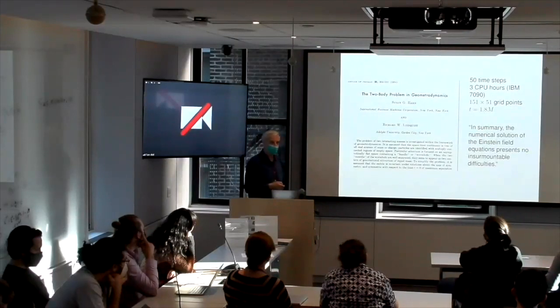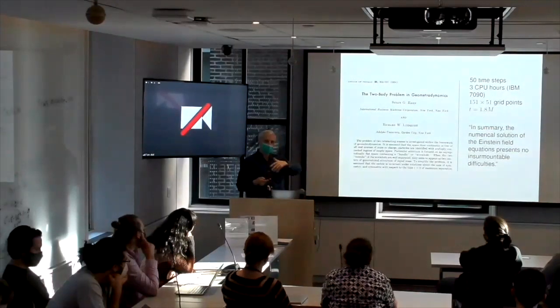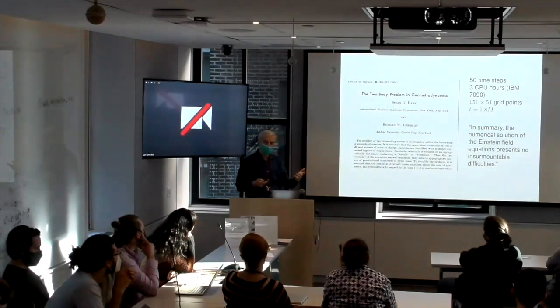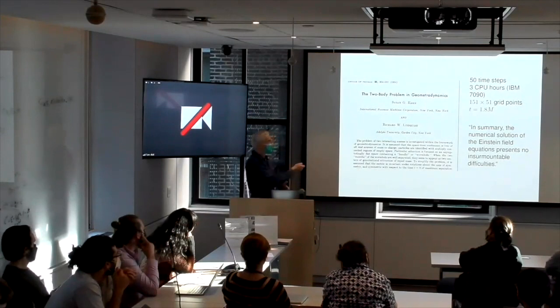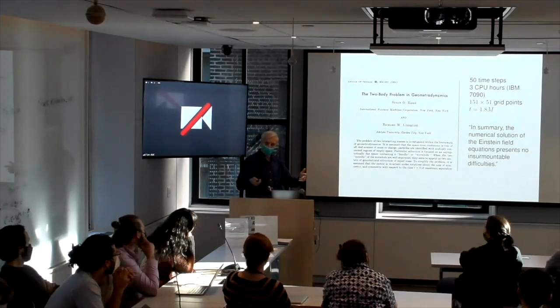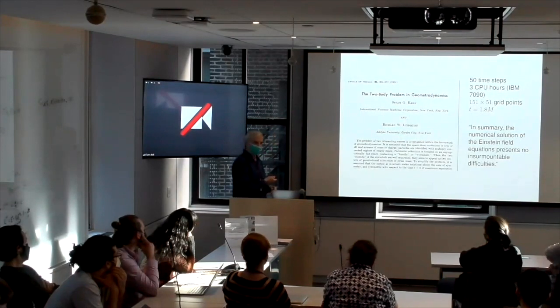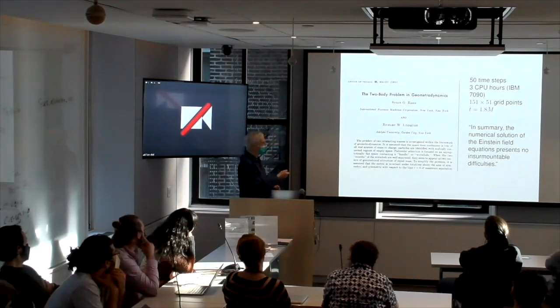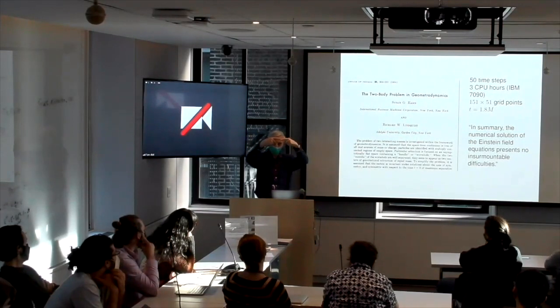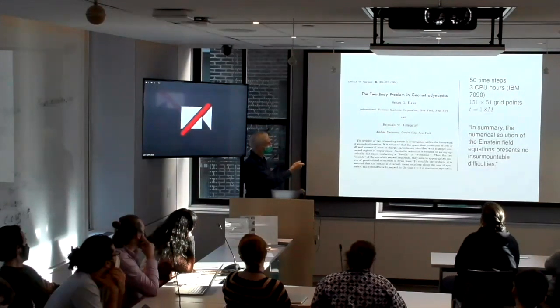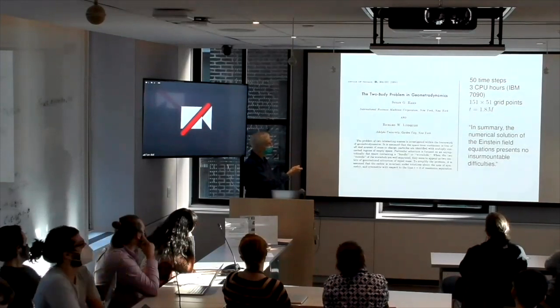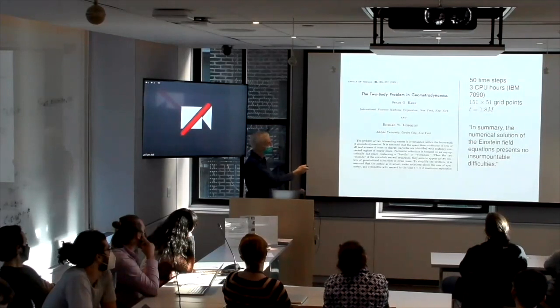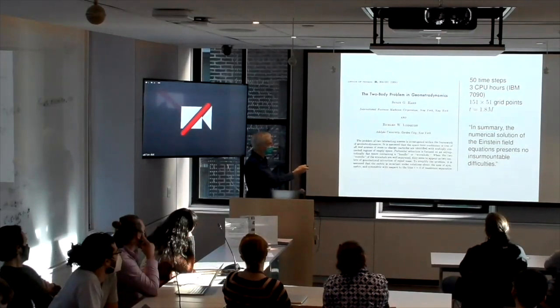Numerical relativity, so I just picked that because that's my field. But what I'm saying applies in general to computational astrophysics. If you look back for any particular field of simulation, around the 60s is when universities started getting big enough computers that people could do interesting things. This is the first paper in numerical relativity by Hahn and Lindquist. And in modern language, this is the head-on collision of two black holes. And it's fun to read the paper. They did 50 time steps. This took three CPU hours on an IBM 7090. They had a grid. This was axisymmetric or head-on collision 151 by 51 grid points. And they evolved up to 1.8 M.